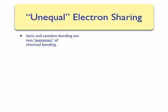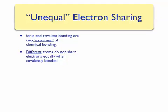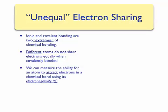In fact, two different atoms, whether two metals or two nonmetals, do not share electrons equally when covalently bonded. We can measure the ability for an atom to attract electrons in a chemical bond by using another periodic property: electronegativity.